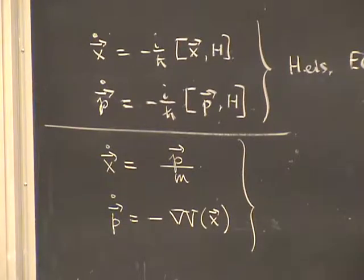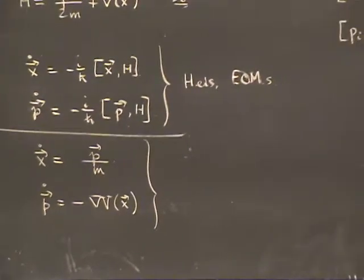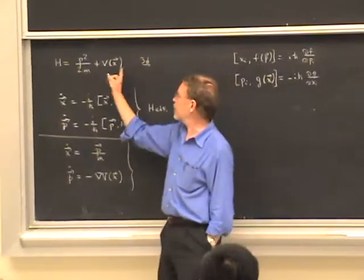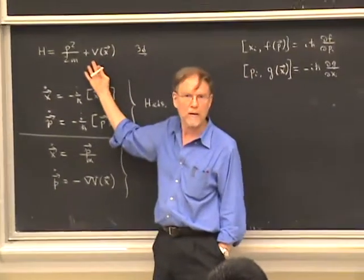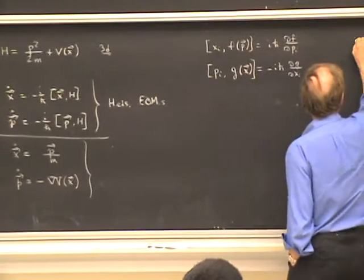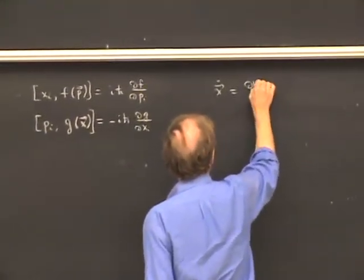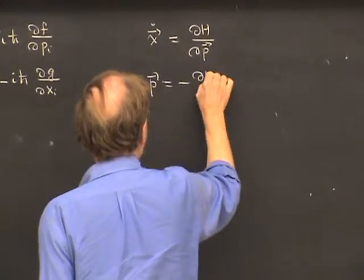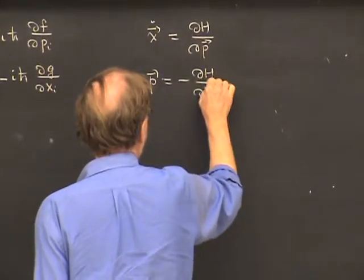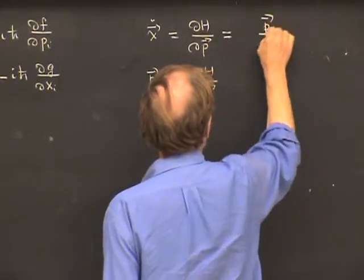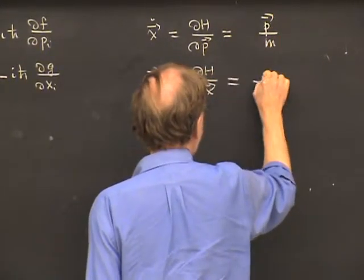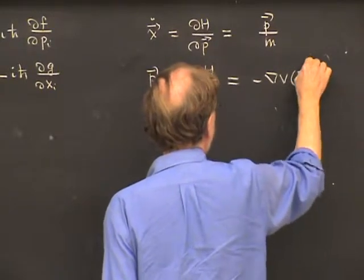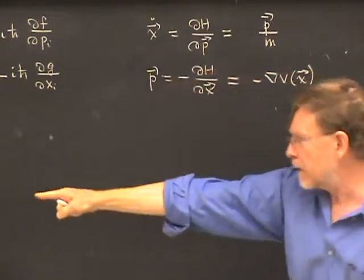What's striking about these equations is that they have exactly the same form as the classical Hamilton's equations. Just with the reinterpretation of symbols, this is the same as the classical Hamiltonian. Hamilton's classical equations are that x-dot equals dH/dp and p-dot equals minus dH/dx, which for this particular Hamiltonian gives p/m for x-dot and minus the gradient of V for p-dot. So they have exactly the same equations.